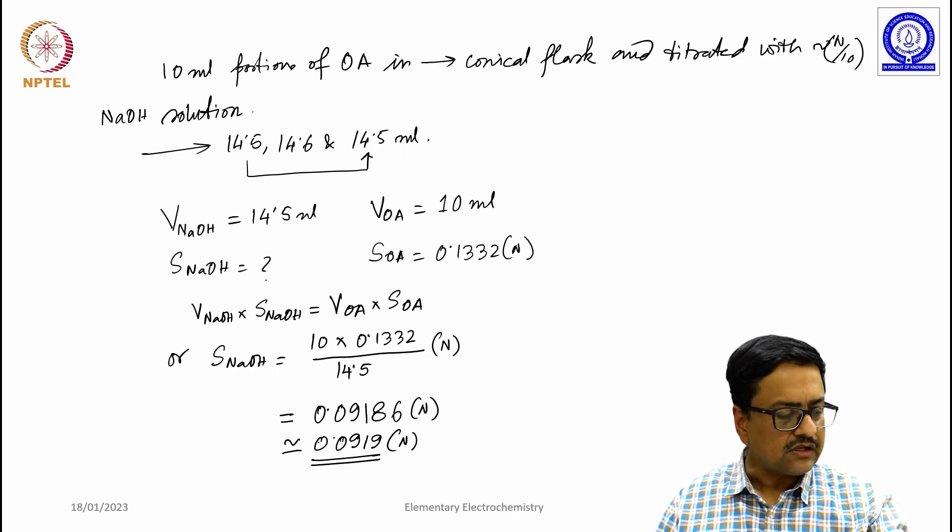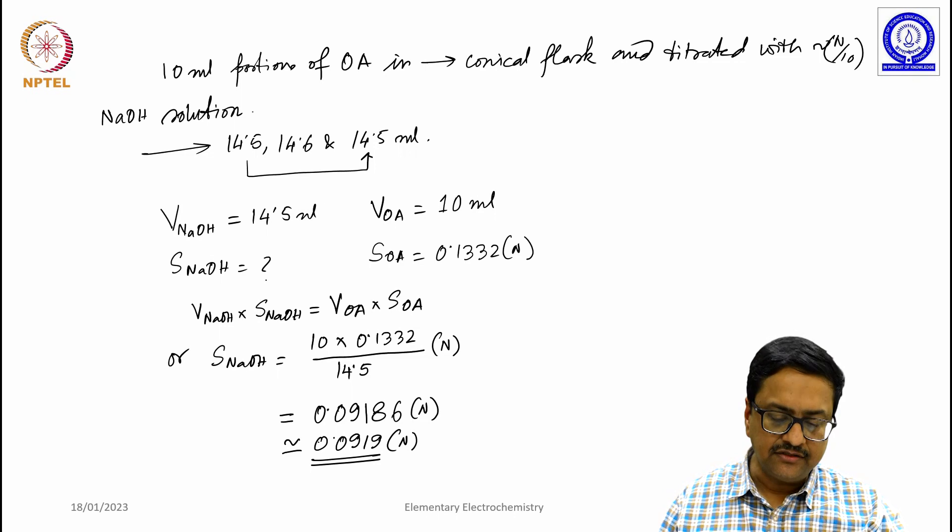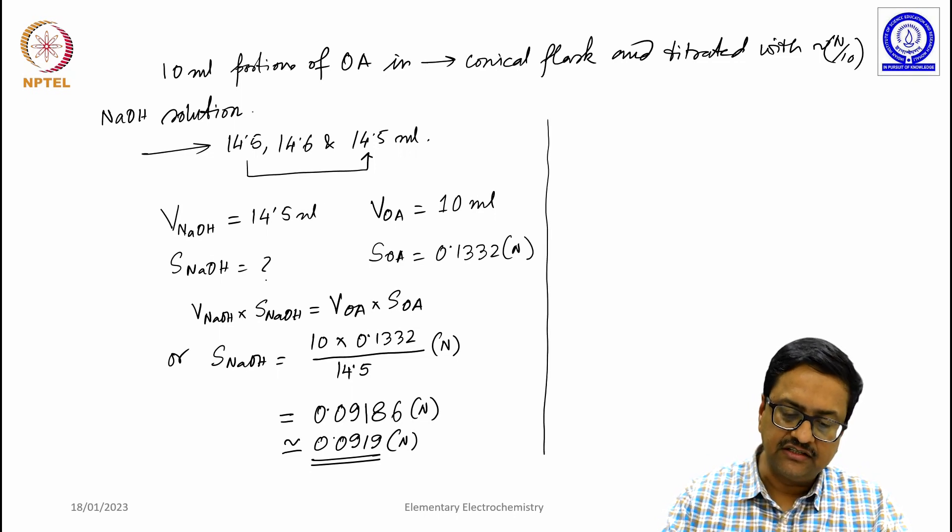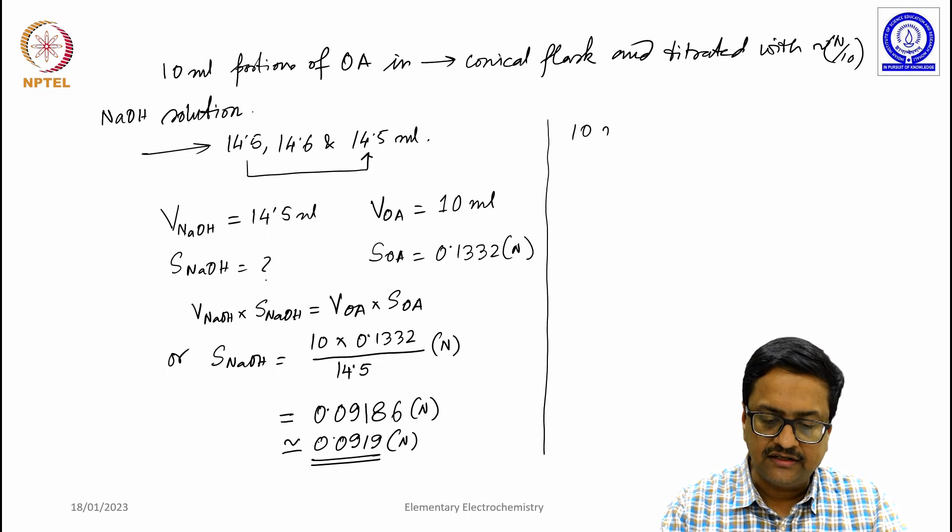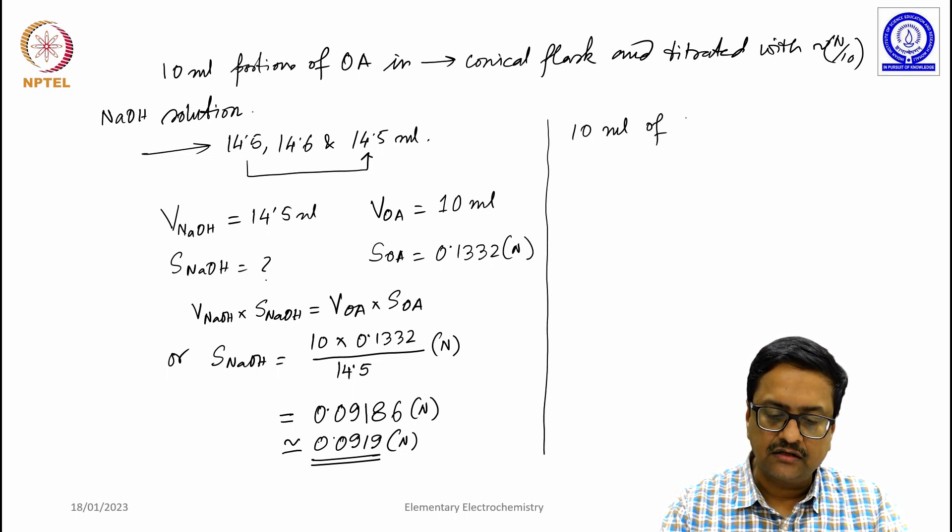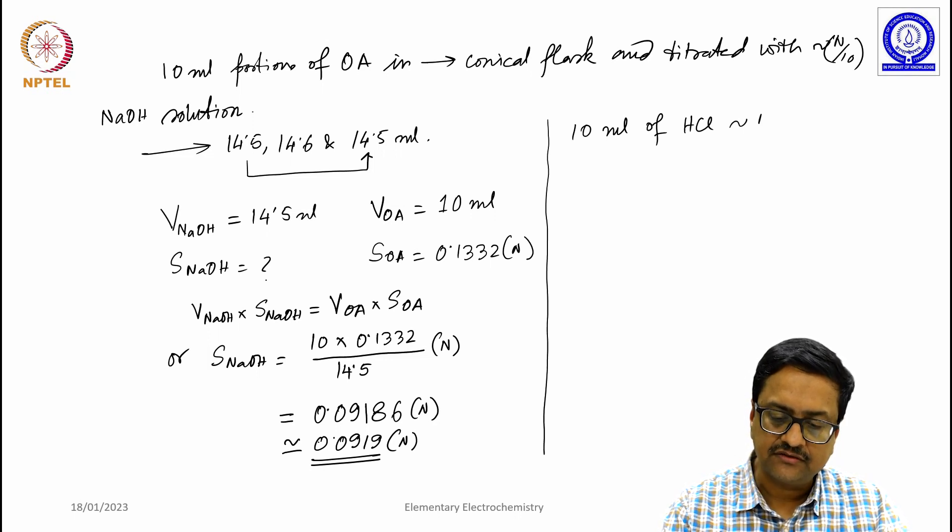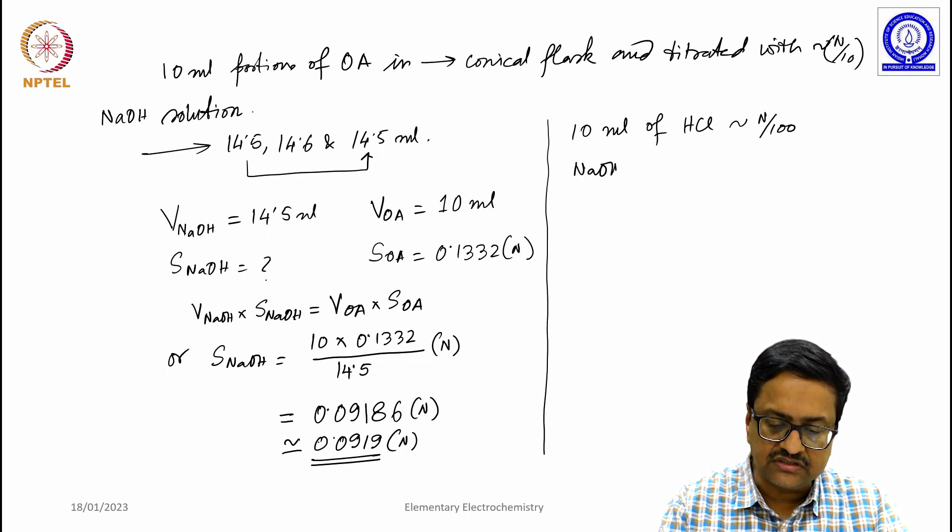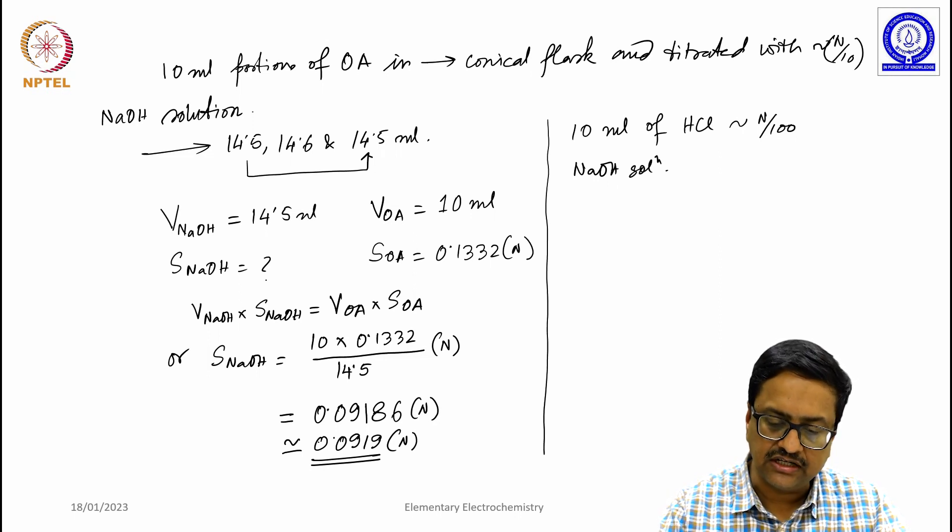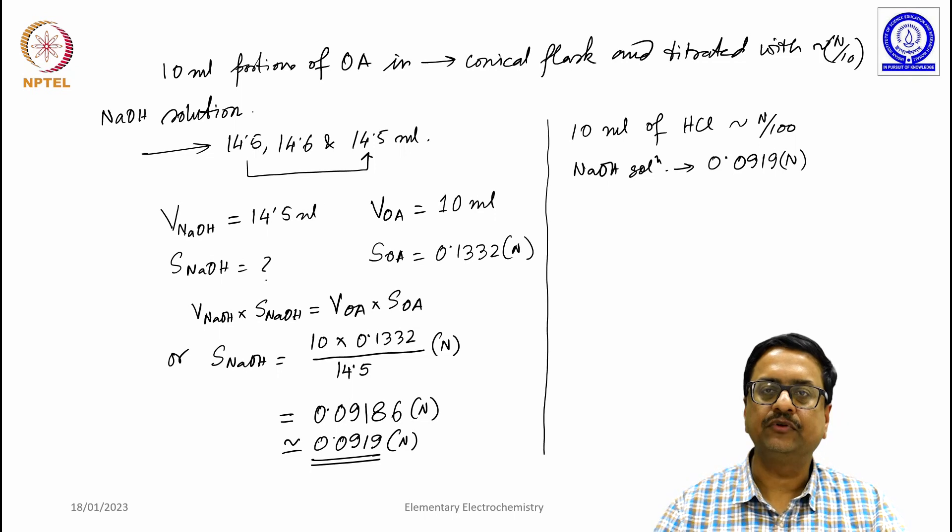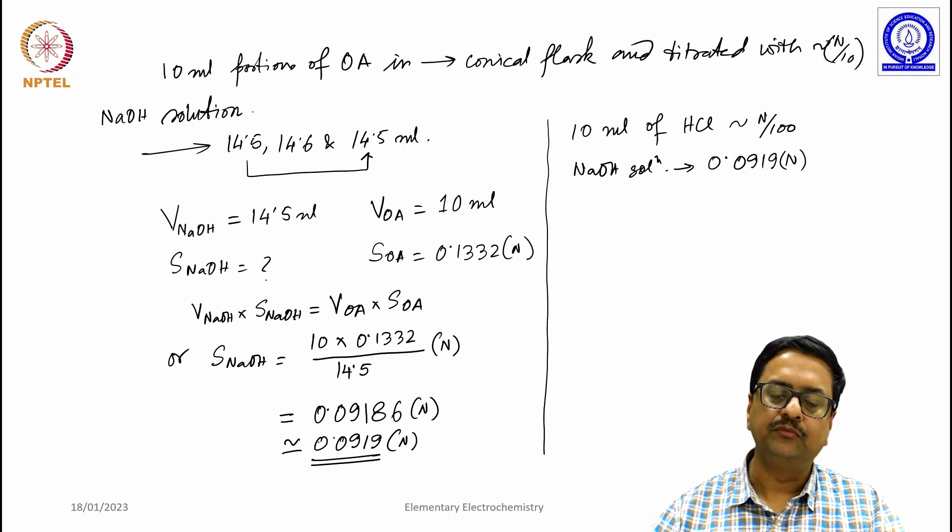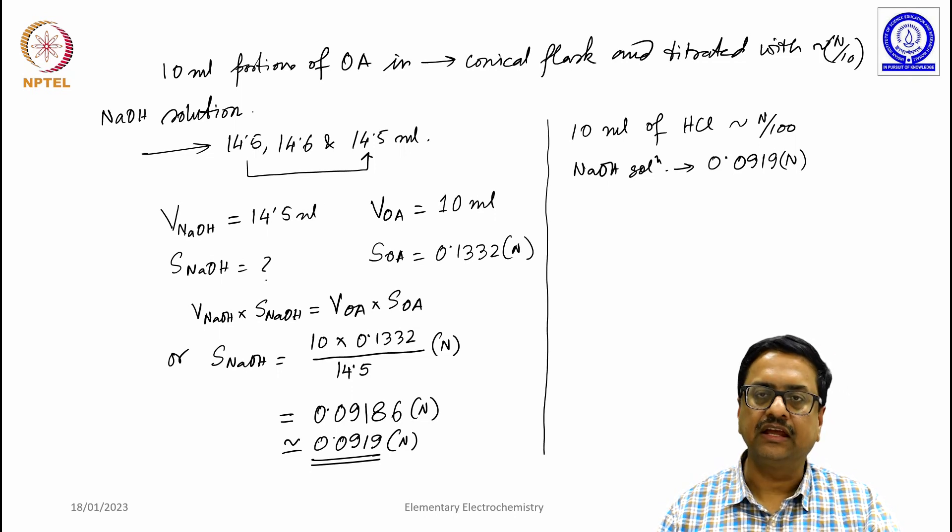So now, if you remember, we have collected a large number of data points using the potentiometric titration, where we have taken 10 ml of HCl solution of approximate strength n by 100, and then we titrated it with the NaOH solution of strength, which we now determined to be as 0.0919 normal, which is approximately 10 times stronger. And if you remember, we have done that experiment using a micro burette,